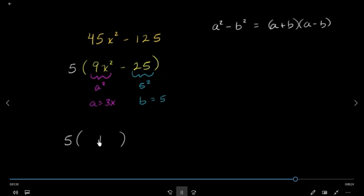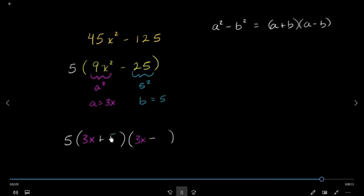So you have a plus and a minus b. If you do 3x, then you will have 3x plus 5, then you will have 3x minus 5.